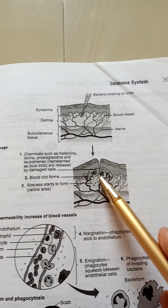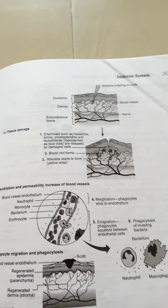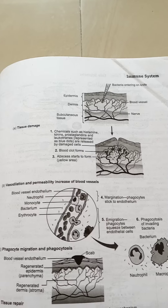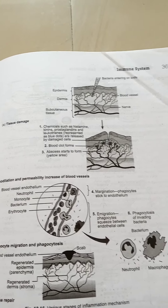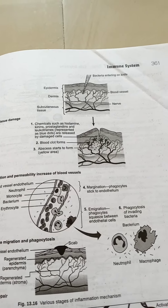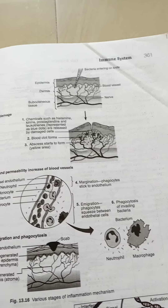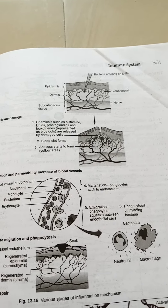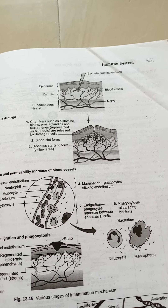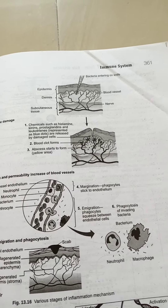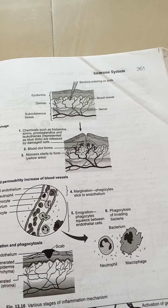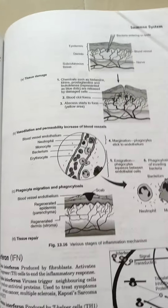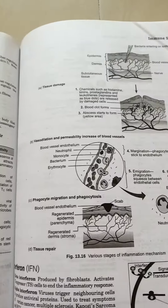Now we come to the cellular phase, which involves phagocytic cell infiltration. Low pH kills microbes, and macrophages attack escaping microbes. Body temperature increases, and IL-1, that is interleukin-1, starts functioning. Specific immunity begins here.